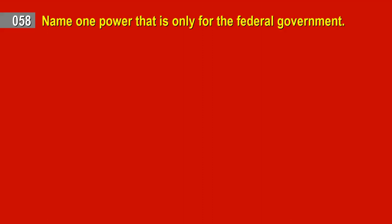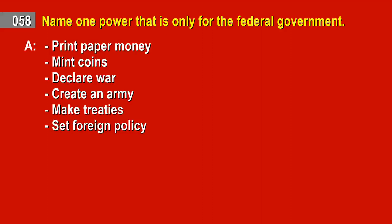Question 58. Name one power that is only for the federal government. Answer: Print paper money. Mint coins. Declare war. Create an army. Make treaties. Set foreign policy.